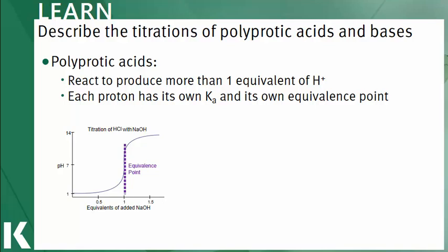While this titration curve is an example of a monoprotic acid, meaning the reaction produces 1 equivalent of H+, sometimes you'll have an unknown concentration of a solution that reacts to produce more than 1 equivalent of hydrogen or hydroxide ions. Poly for many, and protic referring to protons, means many protons.